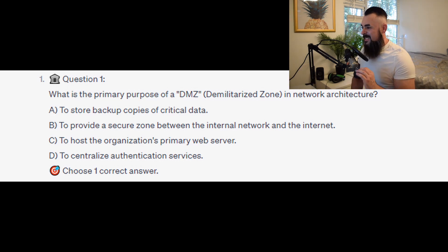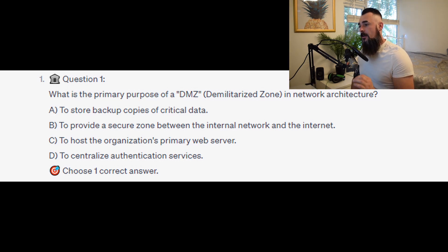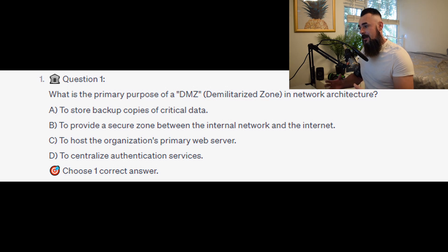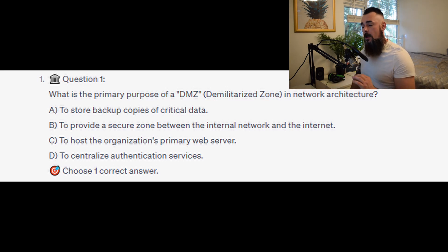What is the primary purpose of a DMZ, or Demilitarized Zone, in a network architecture? Is it A to store backup copies of critical data? Is it B to provide a secure zone between the internal network and the internet? Is it C to host the organization's primary web server? Or is it D to Centralize Authentication Services?